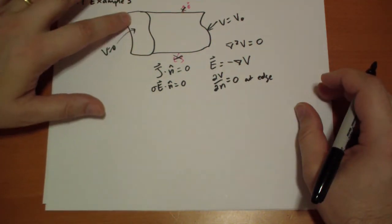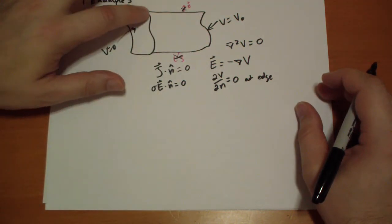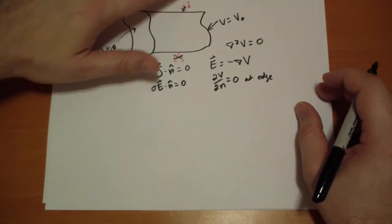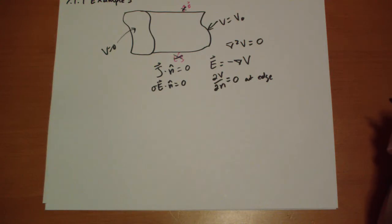So now we have potential defined here, potential defined here, and the first derivative of the potential defined on the edges, and that's enough to get a unique solution. So using the uniqueness theorem, if we can find a solution, we'll know it'll be the solution to this problem.